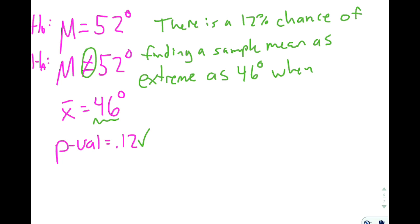When we assume that the null is true, that mu is equal to 52 degrees. So, there is a 12% chance of finding a sample mean as extreme as 46 degrees when we assume that mu is equal to 52 degrees.